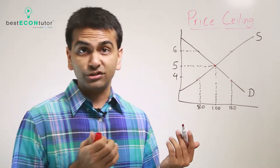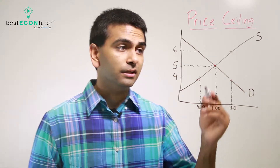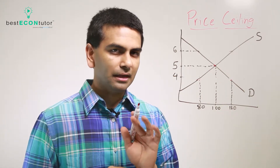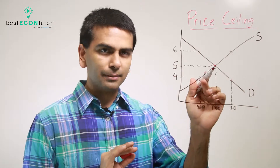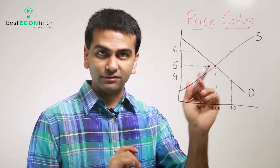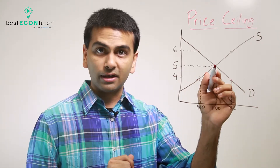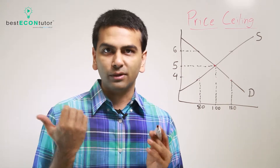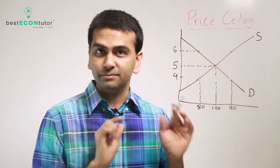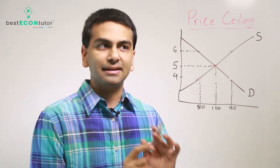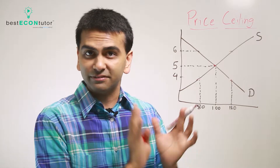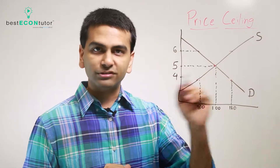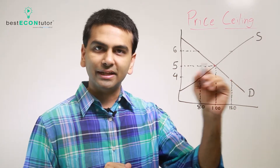Let's take a look at the market for socks where the current equilibrium price is $5. In this theoretical economics world, every single sock ever is sold for that same price of $5 — unlike the real world where different socks have different prices.